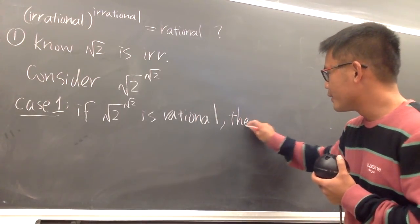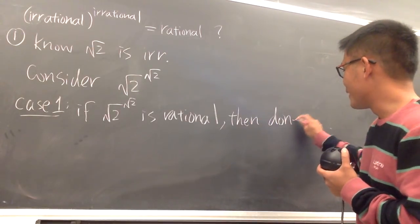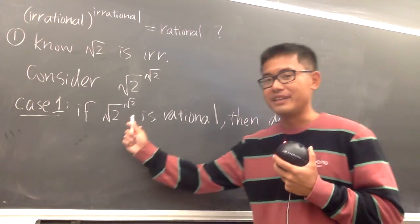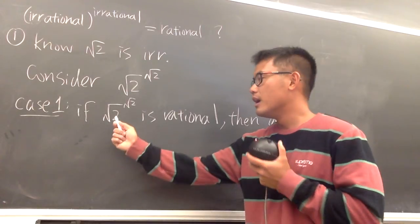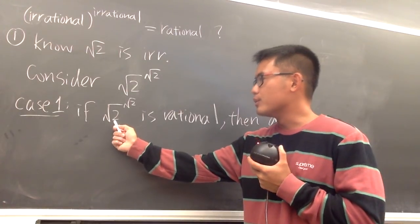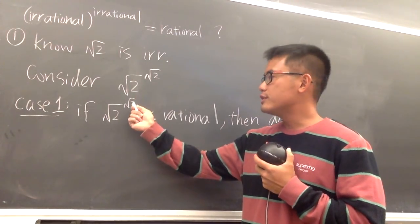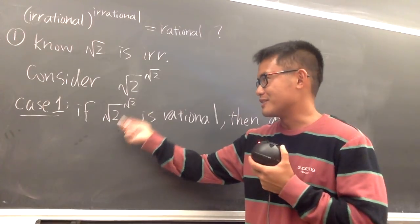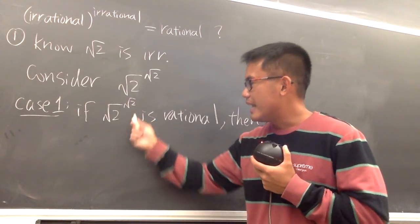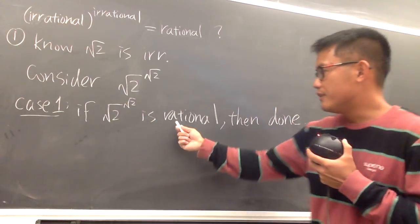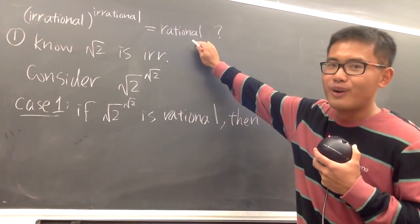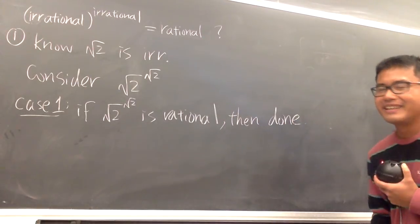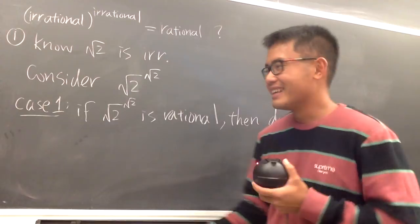Then we are actually done. Why? Because we have an example already: square root of 2, which is irrational, raised to another irrational — because they are the same number. At the end, we said if this is rational, that's what we're looking for, and we're done. So that's case 1.